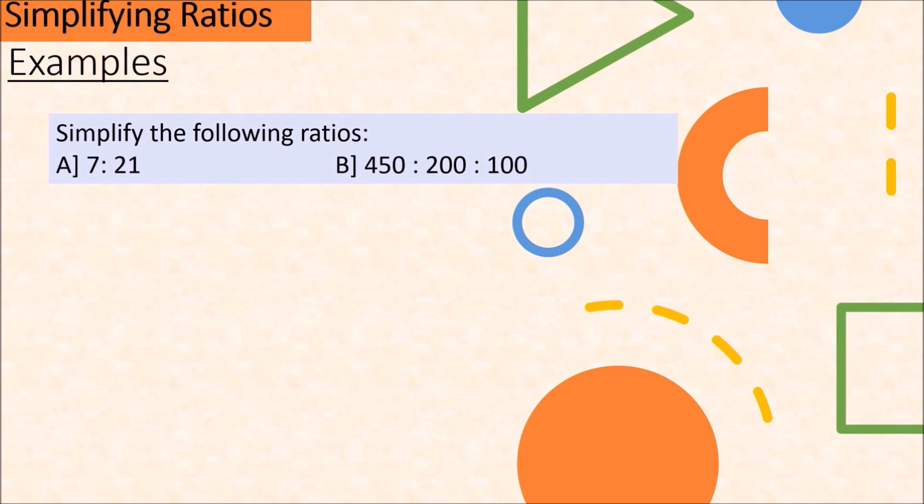Let's have some examples. The first ratio, 7 is to 21. This is telling us that if we have 7 of one thing, we have 21 of something else. To simplify this ratio, we will divide both terms 7 and 21 by the same number. So let's find factors of 7 and 21. The factors of 7 are 1, 7. The factors of 21 are 1, 3, 7, and 21.